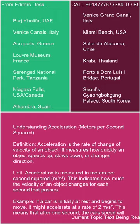Understanding acceleration — meters per second squared. Acceleration is the rate of change of velocity of an object. It measures how quickly an object speeds up, slows down, or changes direction. Acceleration is measured in meters per second squared (m/s²), indicating how much the velocity of an object changes for each second that passes.